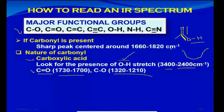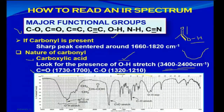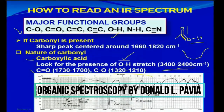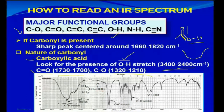For the OH stretching in carboxylic acid, the OH can also be found in alcohols and phenols, but in alcohols the OH stretch or band is not as broad — it will not start from 2400. Here is an example taken from the textbook: we have a carboxylic acid functionality attached to an alkyl group, specifically an isopropyl group.